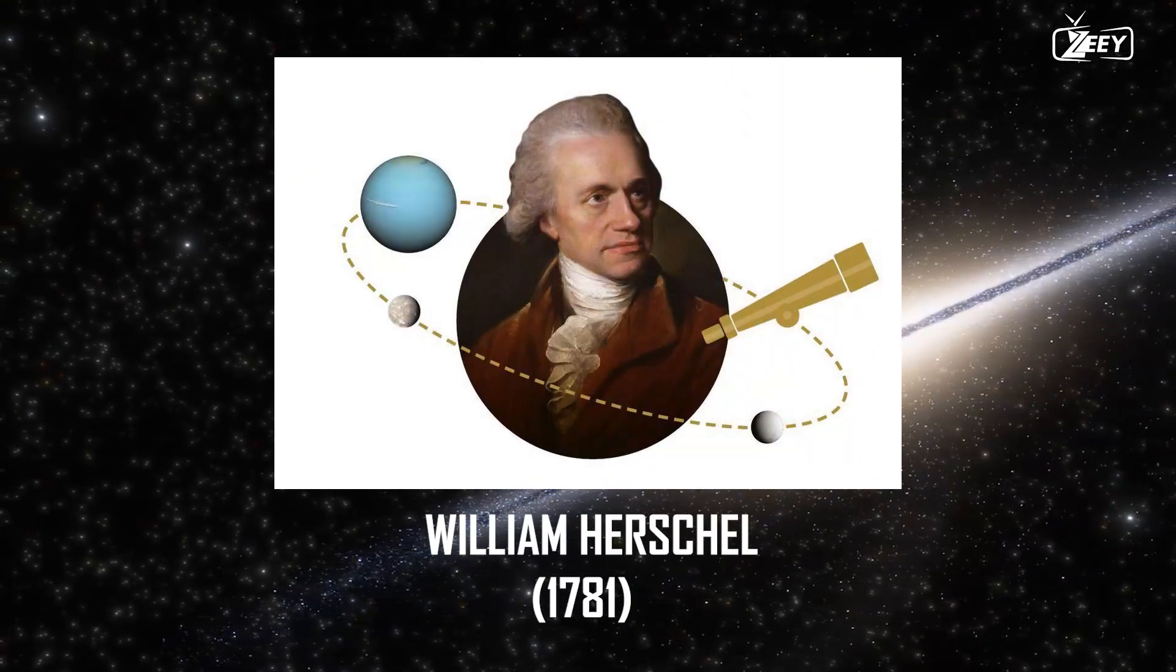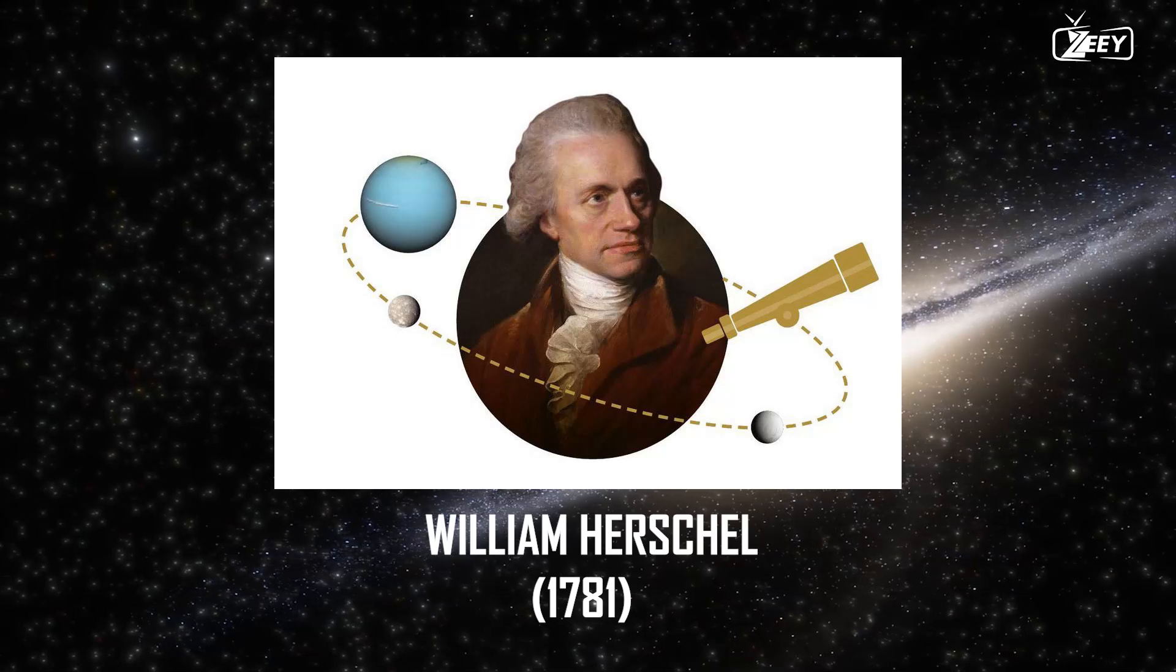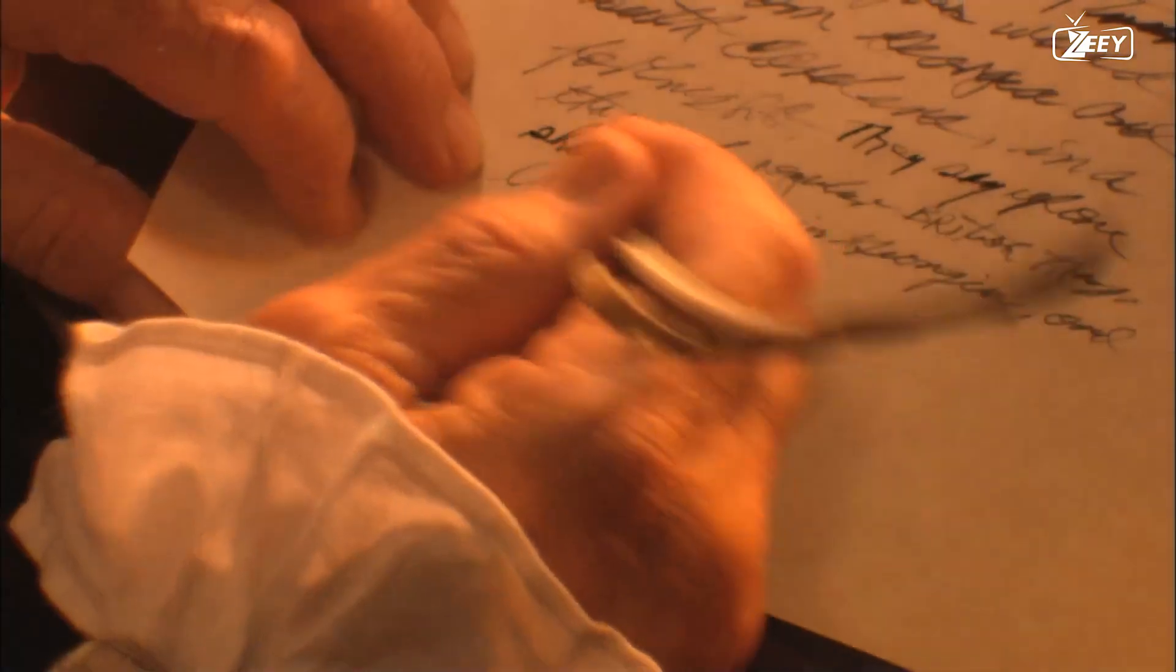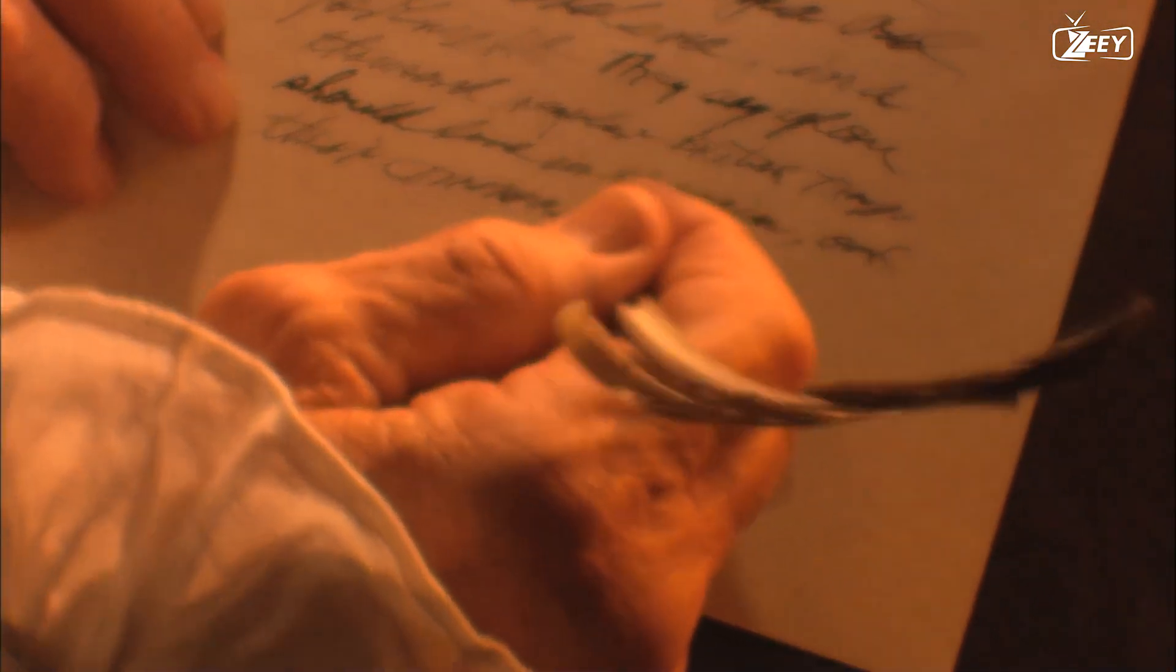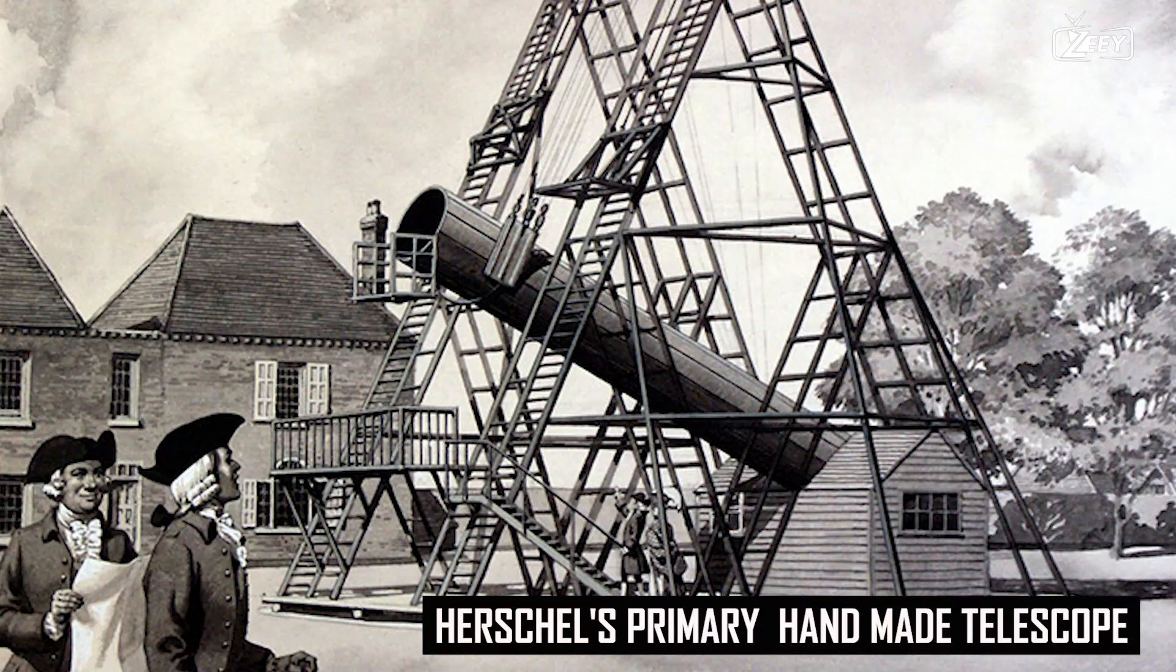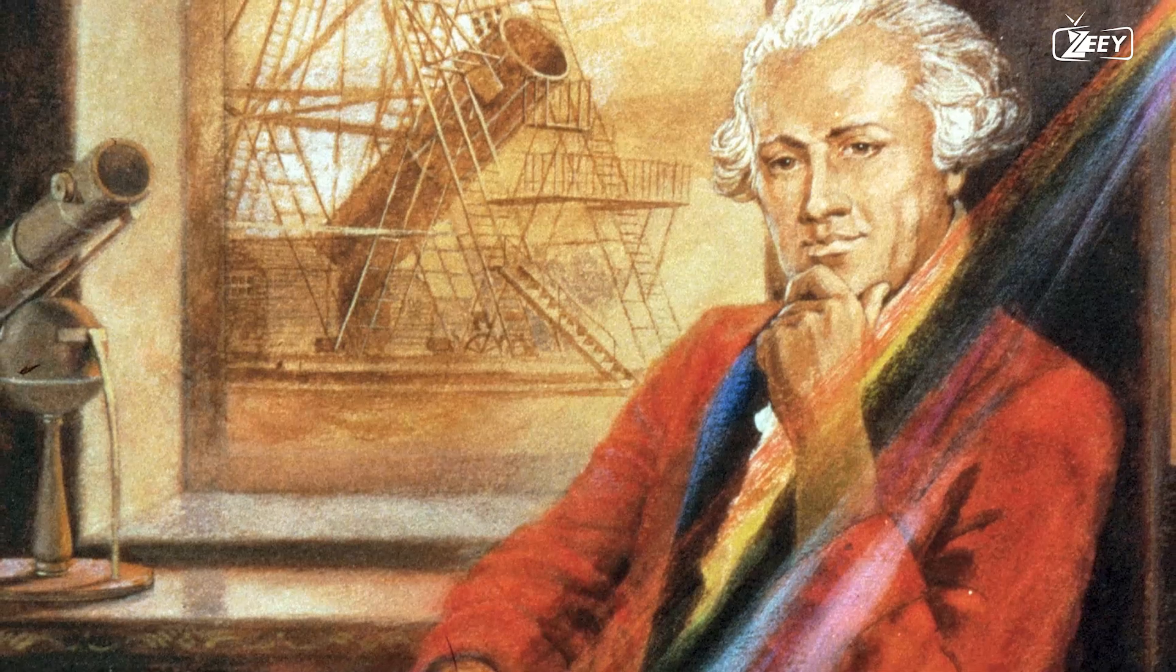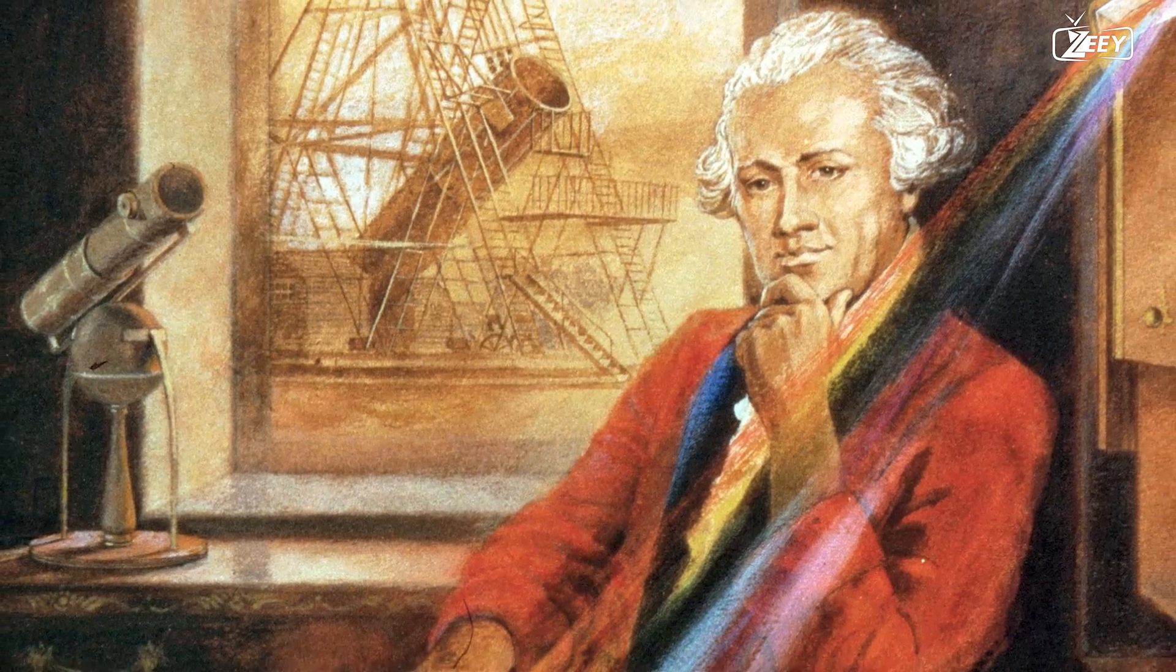William Herschel, who is best known for his 1781 discovery of the planet Uranus, took the first significant step in this voyage in the 18th century. Herschel was not only an astronomer, but also a cartographer of the universe. Herschel's primary investigative instrument was a handcrafted telescope that allowed him to gaze deeper into the cosmos than anyone before him. He was a bold thinker and dared to take on a task that no one had ever attempted to map the constellations of the Milky Way.